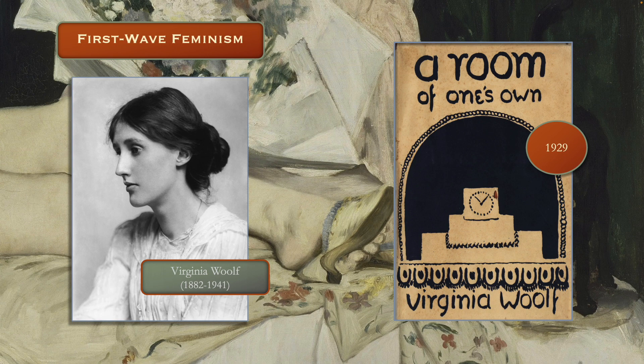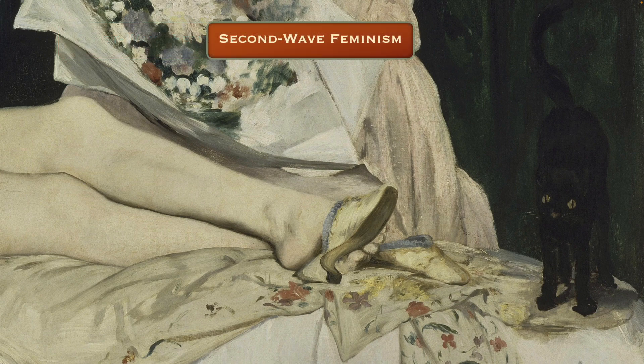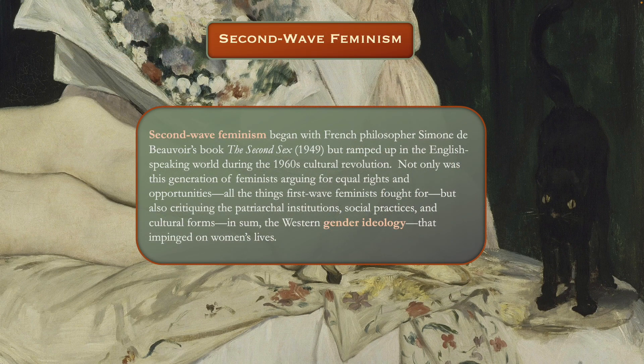So those are some of the signature works of first wave feminism. The second wave began with the French philosopher Simone de Beauvoir's book, The Second Sex, which appeared in 1949. But second wave feminism really ramped up in the English-speaking world during the 1960s cultural revolution.